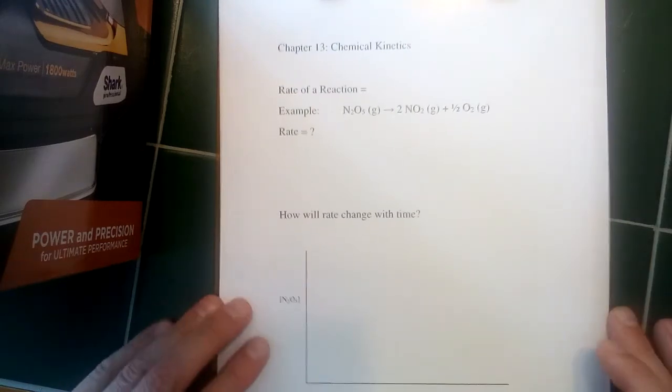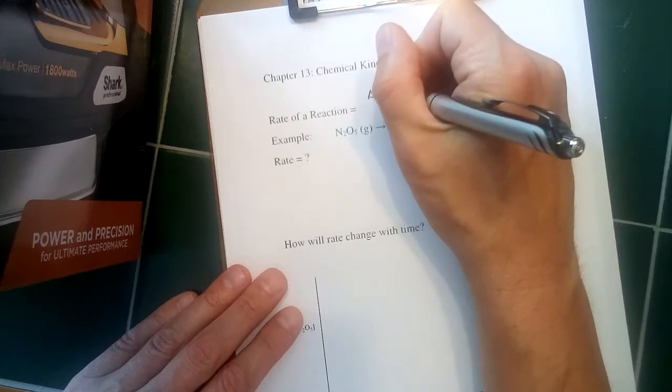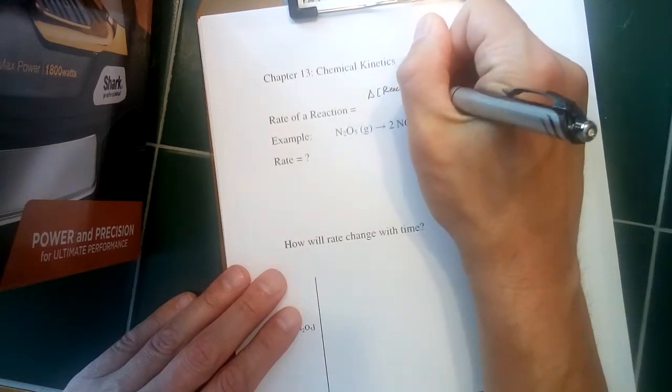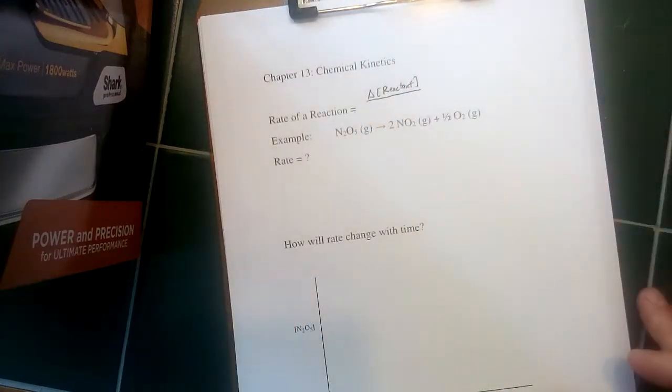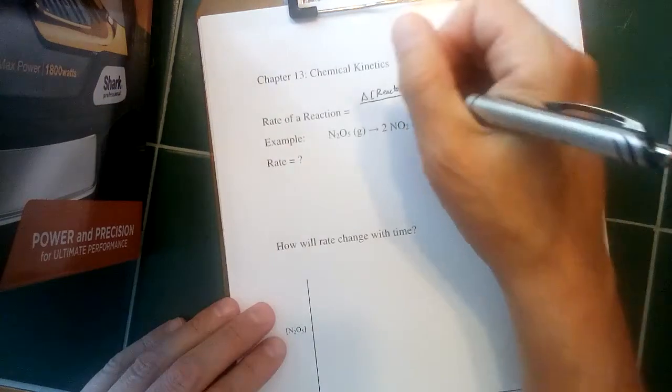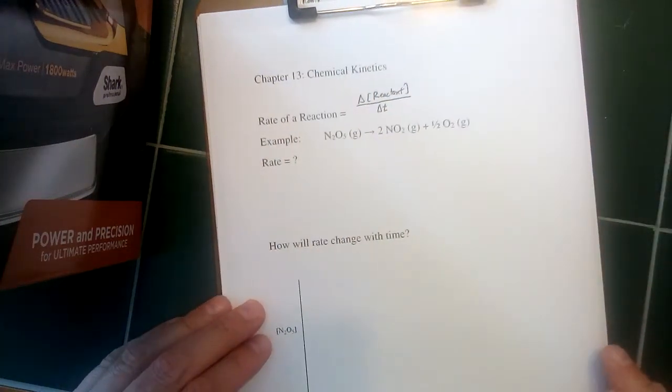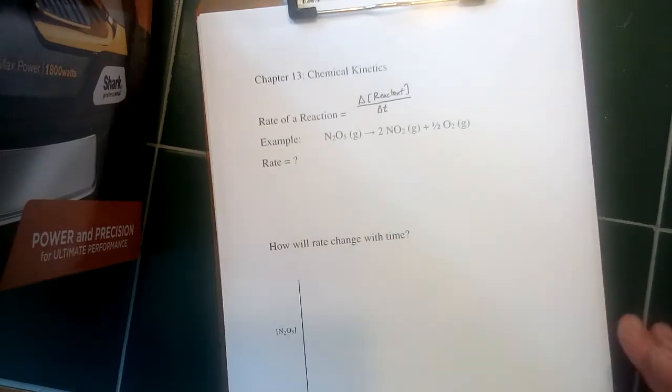Now, one way to define the rate of the reaction is as the change in concentration of a reactant. So delta for change and then square brackets for concentration relative to a change in time. So how much does that concentration go down over a certain period of time?